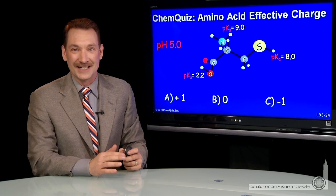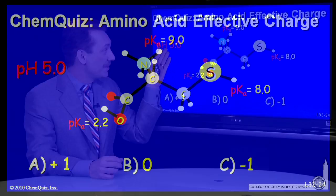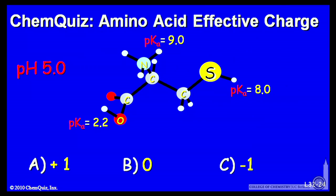We're looking at the amino acid cysteine at pH 5. So we have to compare the pH to each individual pKa and determine the protonation state at each site.